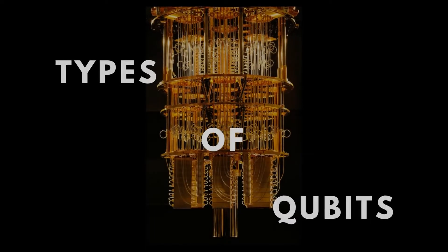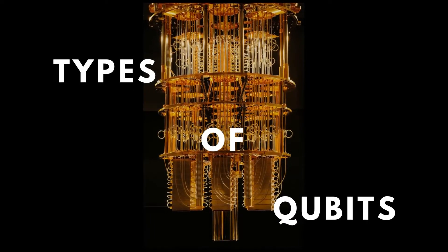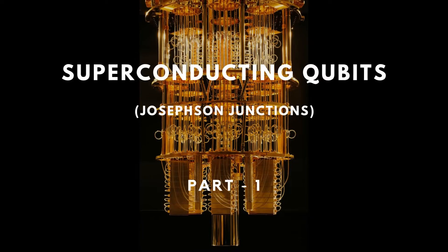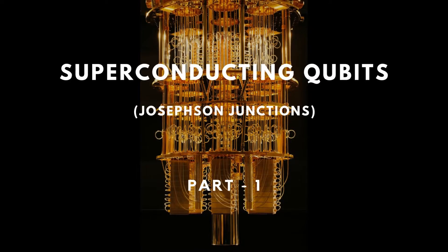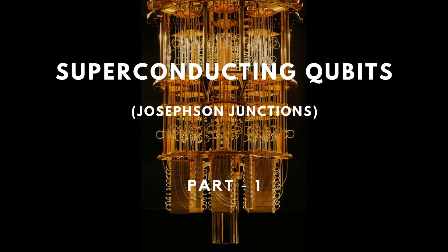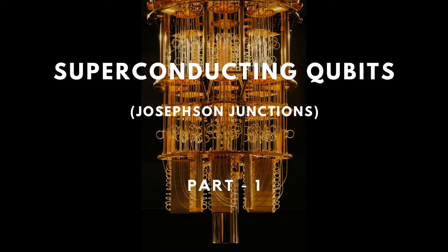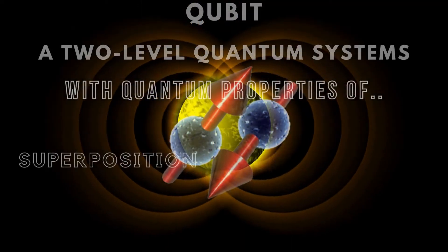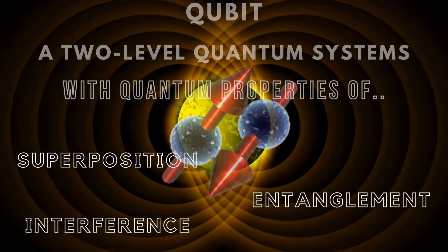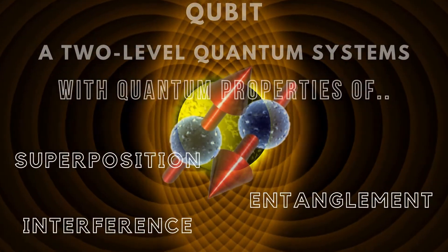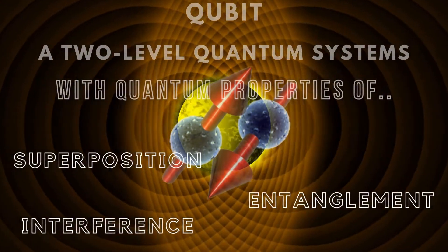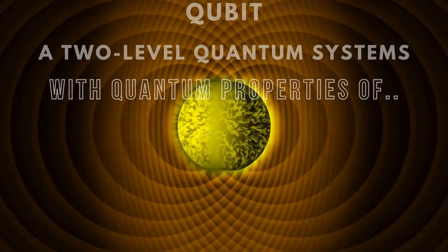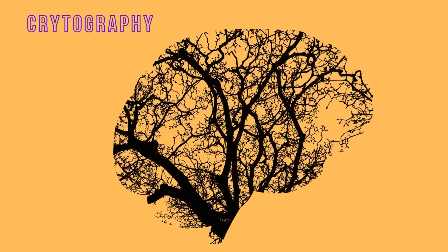In this video, I will explain superconducting qubits. Superconducting qubits are a specific type of qubit at the forefront of quantum computing research. They rely on principles of quantum interference, superposition, and entanglement to perform multiple computations simultaneously, leading to massive speedups compared to classical computing.